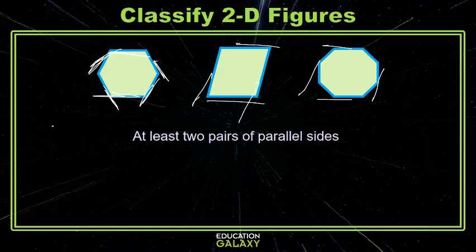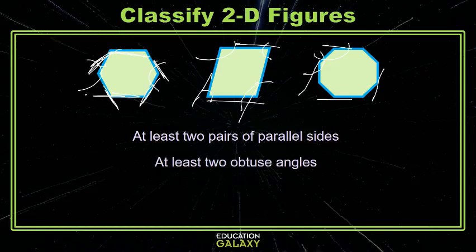What about the angles? Do you see anything in common with the angles? Well, these all appear obtuse to me in this first figure. I have two obtuse here, but I also have two acute, and then it appears I have all obtuse in the octagon. So what I'm seeing is that we have at least two obtuse in each figure.